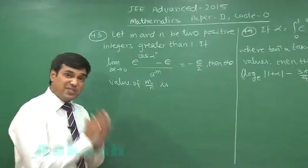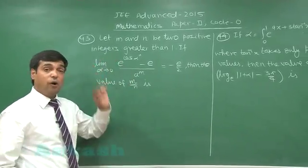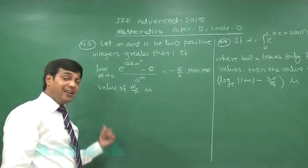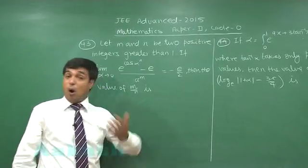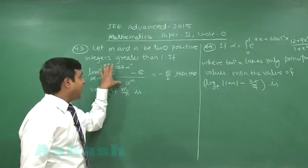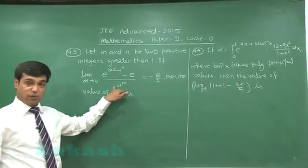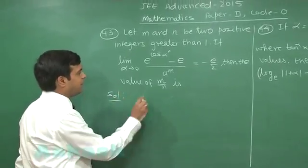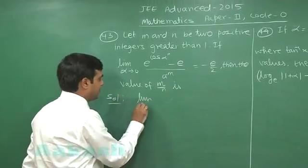Now, we can proceed either applying the form e to the power f x minus 1 upon f x under the limit x approaching to a, or we can apply L'Hôpital rule as it is 0 by 0 form. Let us go for the second one. Either way, we will get the answer directly.